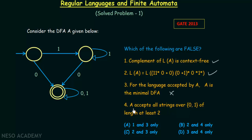Statement 4 says A accepts all strings over {0,1} of length at least 2. This means it should not accept strings of length less than 2. But looking at the DFA, from the starting state, on input 0, it immediately goes to the final state. So the string '0' of length 1 is accepted. Therefore, the statement that all accepted strings have length at least 2 is false, and statement 4 is also false.